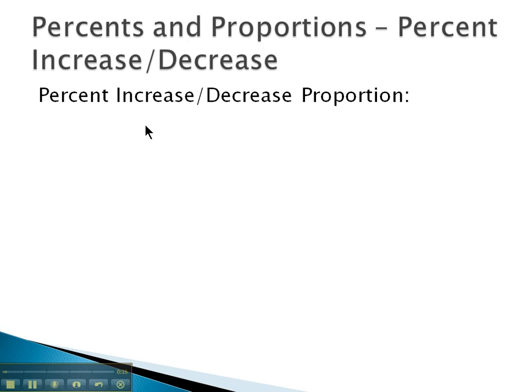The percent increase and decrease proportion is the absolute value of the difference, the old minus the new, divided by the old value. That will equal our percent over one hundred.